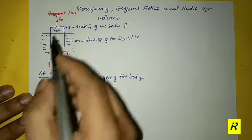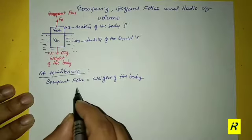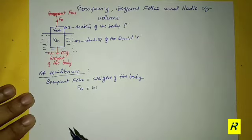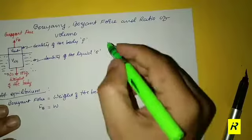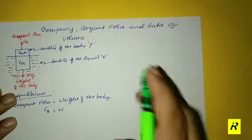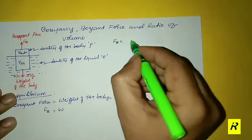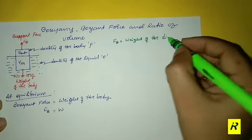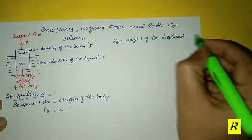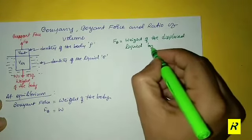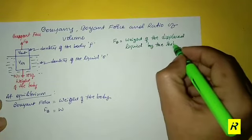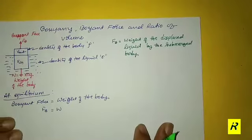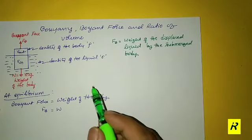At equilibrium, FB equals the weight of the body W. In accordance with Archimedes' principle, the buoyant force is always equal to the weight of the displaced liquid displaced by the submerged body.